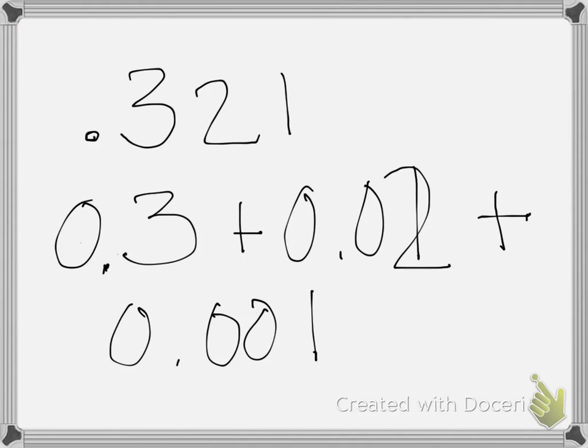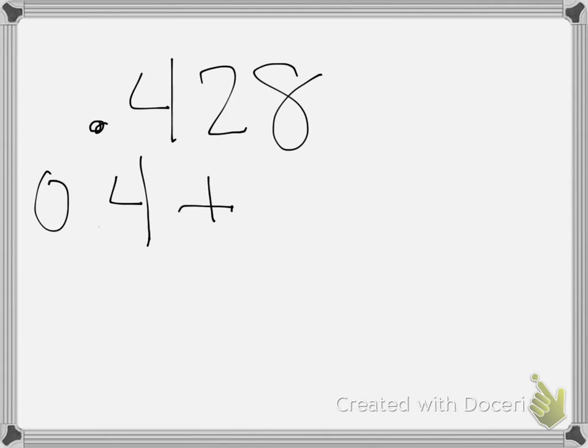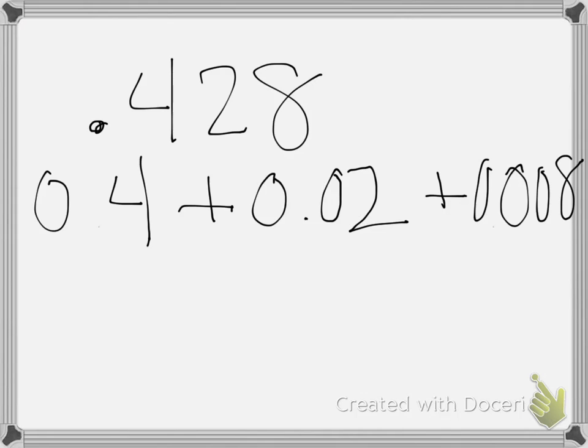Let's take a look at another one. How would I write the number 428 thousandths as an expanded decimal? I would have 4 tenths plus 2 hundredths plus 8 thousandths.